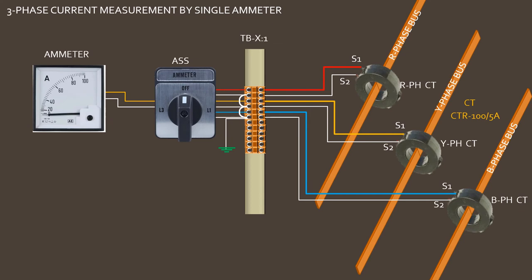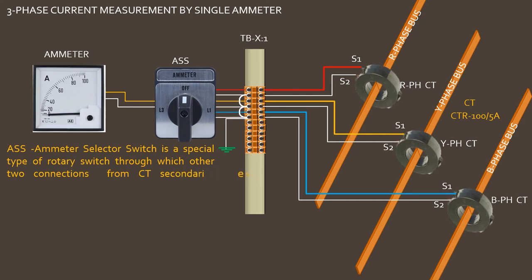By using an ampere selector switch, three phase readings can be obtained by a single ammeter. ASS ampere selector switch is a special type of rotary switch through which the other two connections of CT secondaries become shorted at the switch.